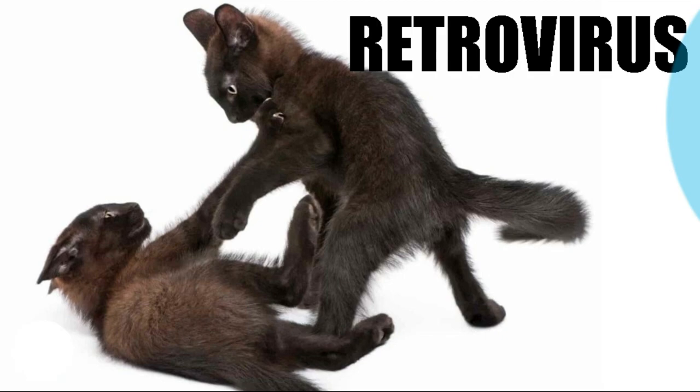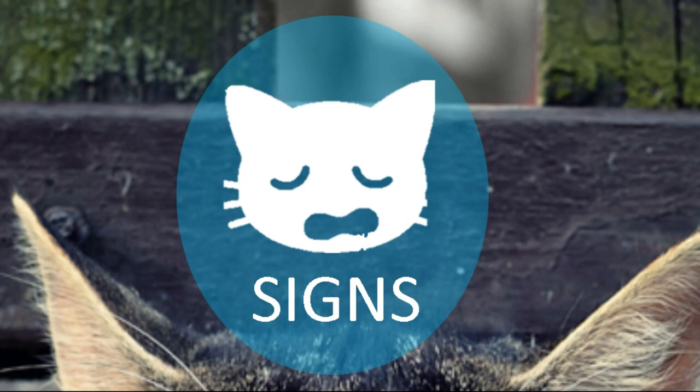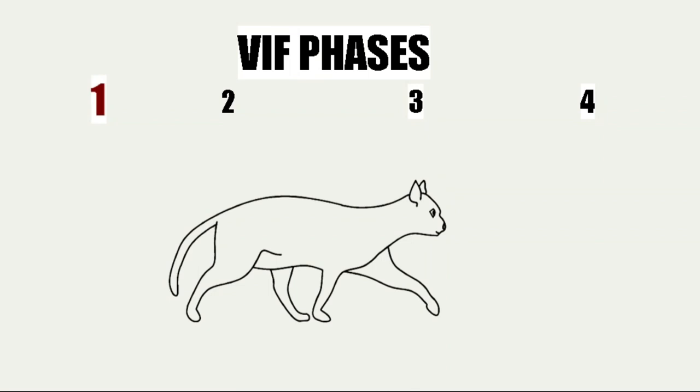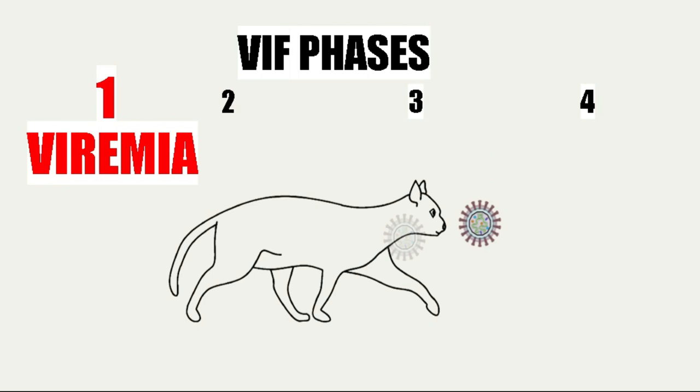Once the virus enters the cat's bloodstream, we can recognize four phases in the disease. In the first phase, there is a viremia, in which the virus passes into the blood, replicates, and is distributed through different tissues. At this time, there will be different signs such as hypothermia, decay, and anorexia.